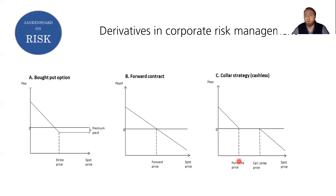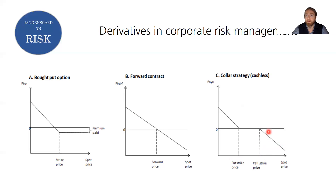The collar has two strike prices: one for the put option you bought and one for the call option you've sold. You see a positive payoff when the product price or exchange rate falls sufficiently below the put strike price. However, you stand to lose on the contract if the spot price ends up higher than the call option strike price, because you're liable to pay whoever bought the call option. This effectively puts a cap on your upside potential.